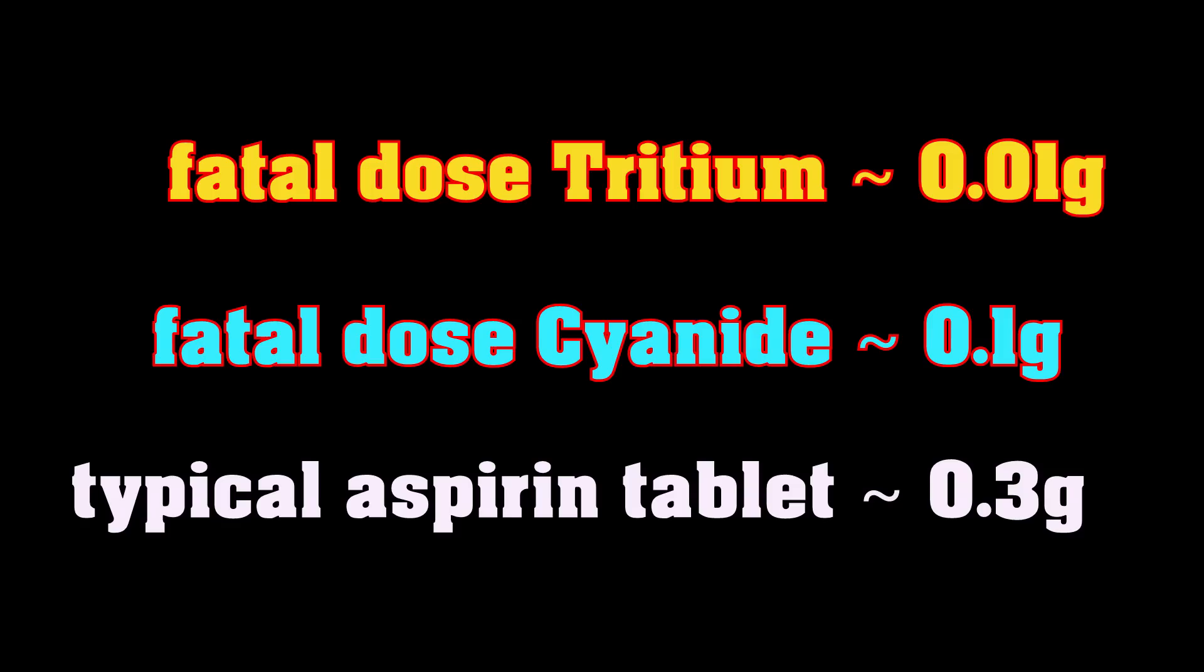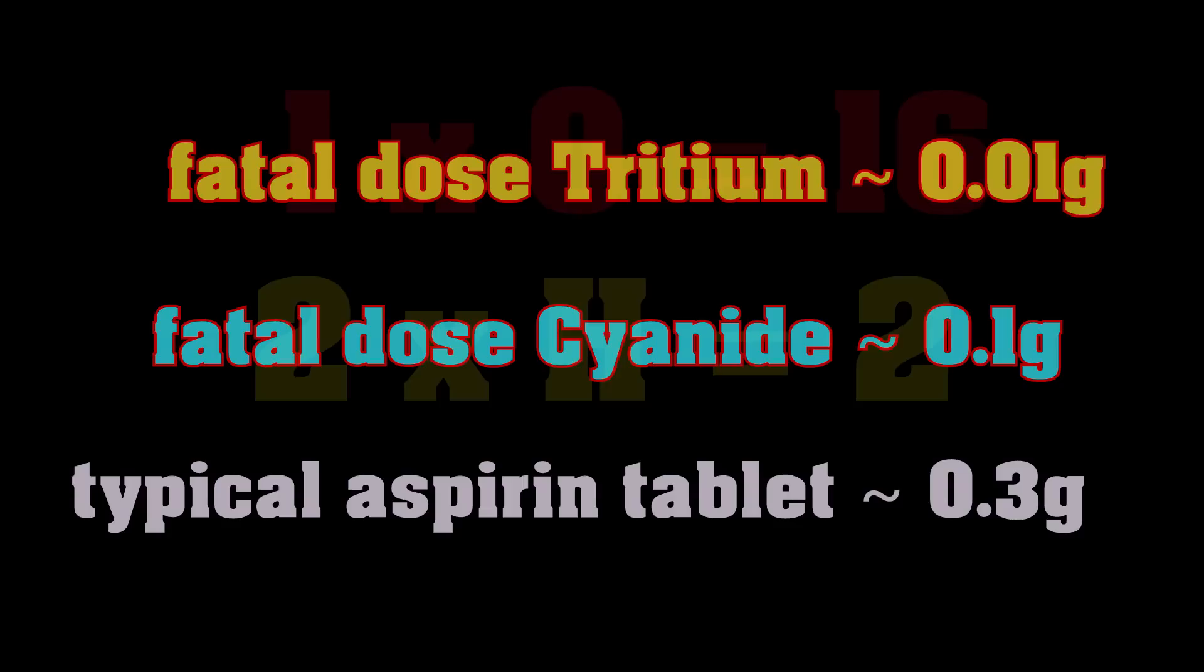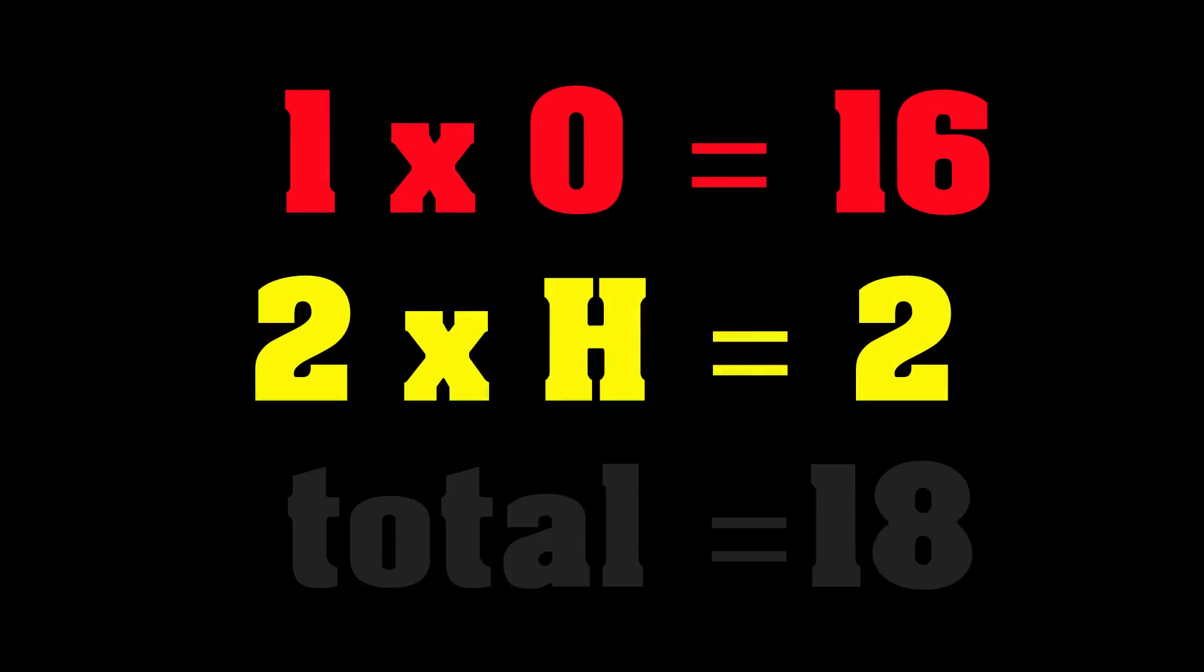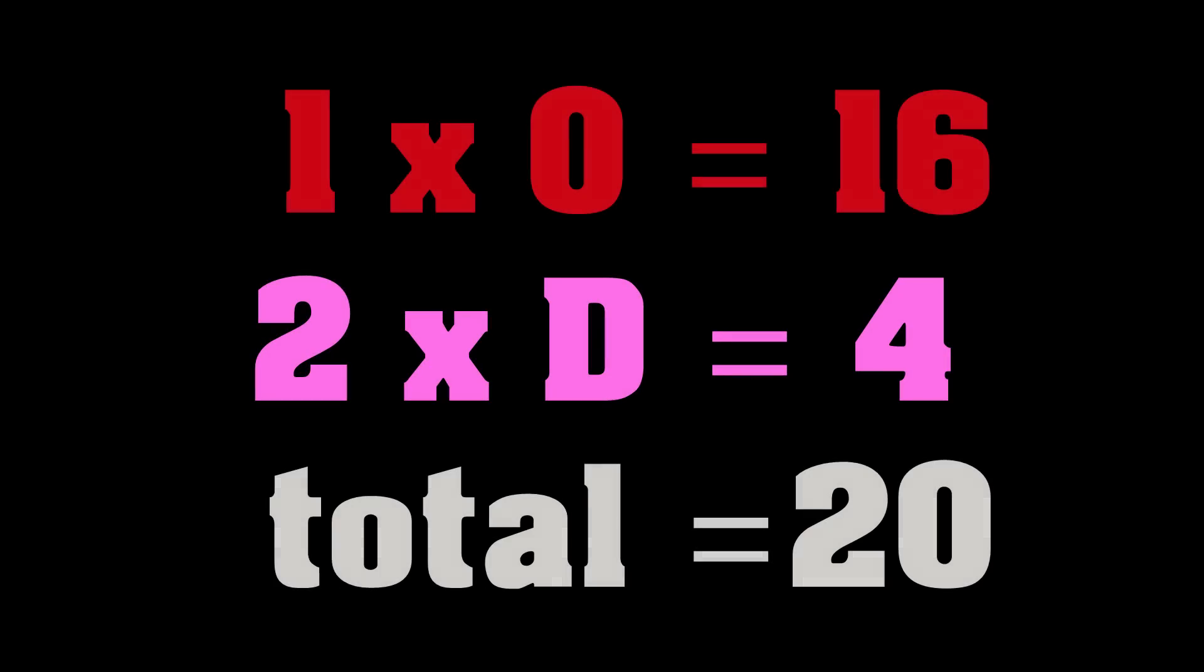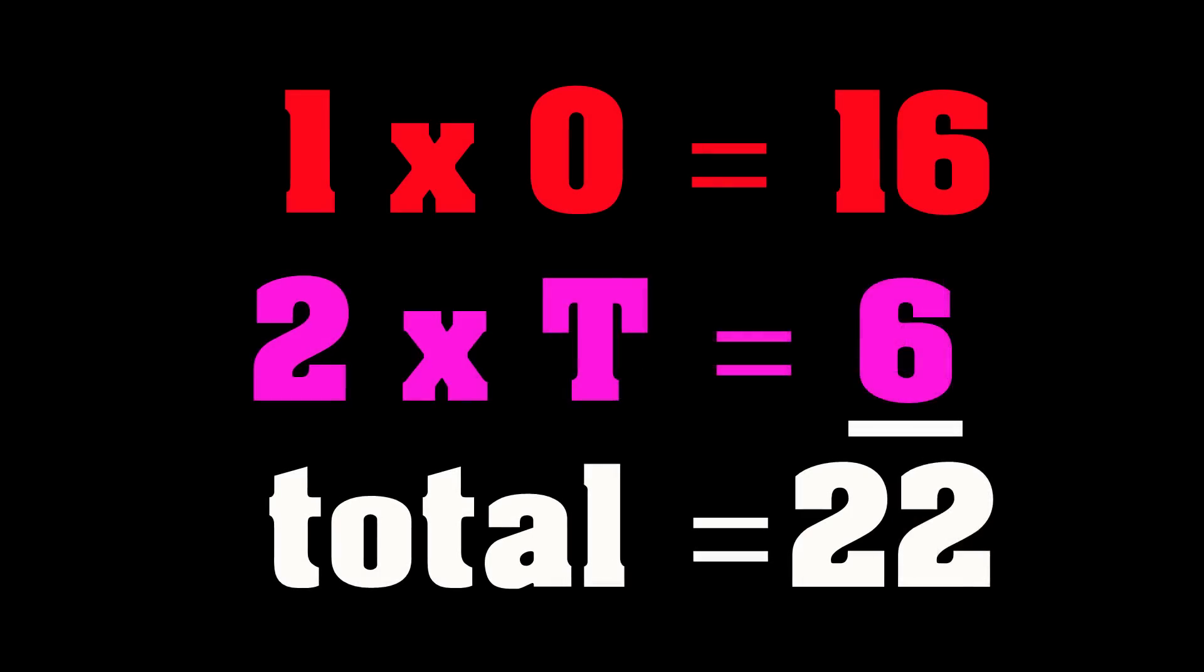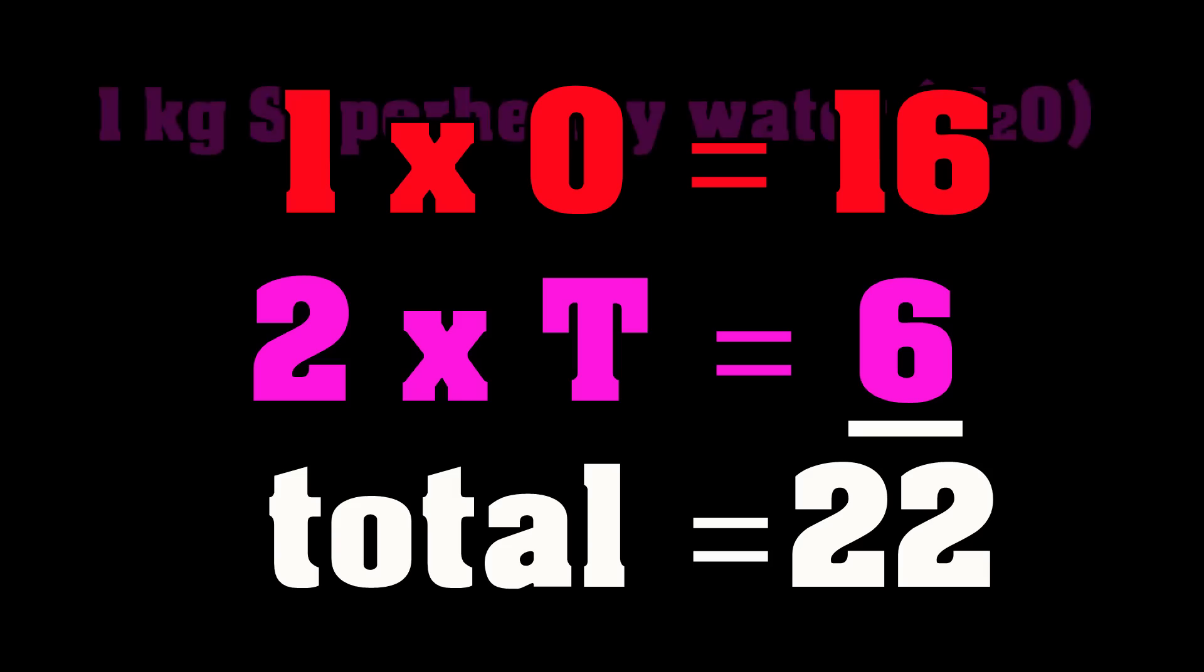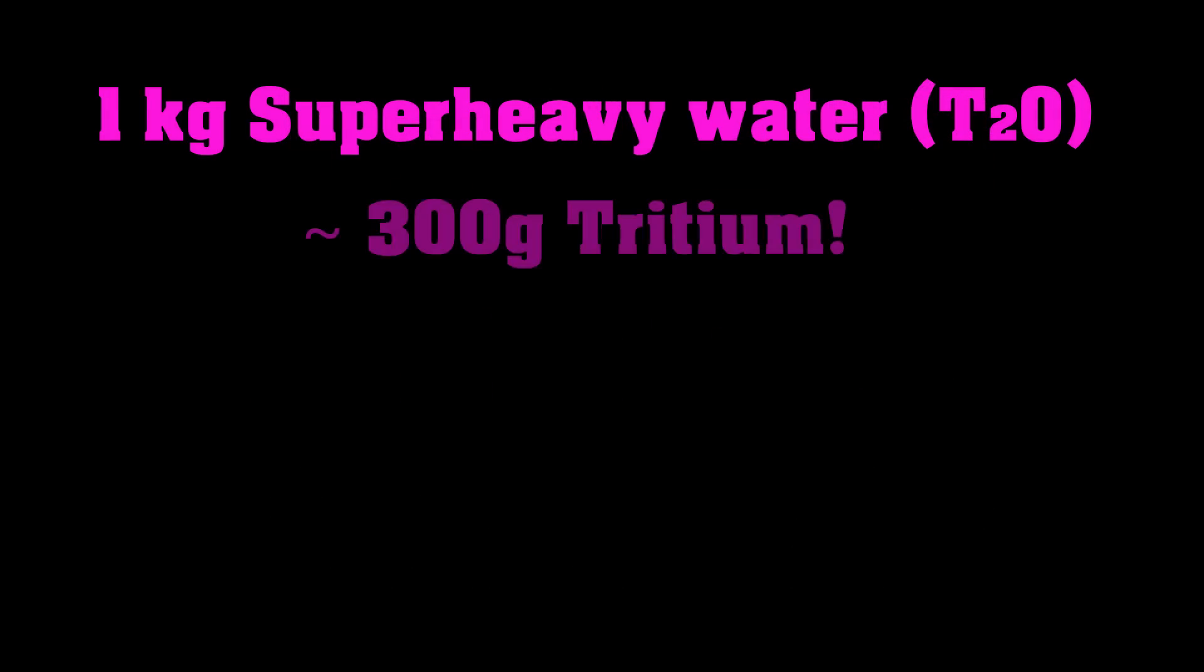But there would be other problems about getting pure T2O just to taste test it in the first place. In regular water, the oxygen weighs some 16, and the hydrogen's one apiece, so that's two. So, about 10% of the mass of the water is hydrogen. The deuterium weighs twice as much, so it's about 20% of the water is deuterium. In super-heavy water, about 30% of the mass is going to be tritium.